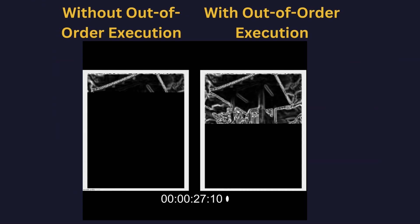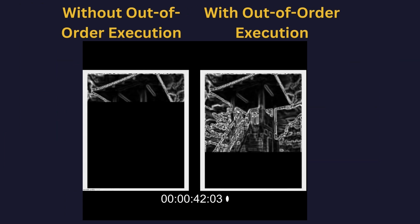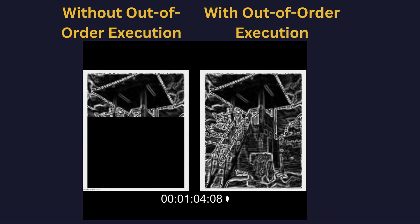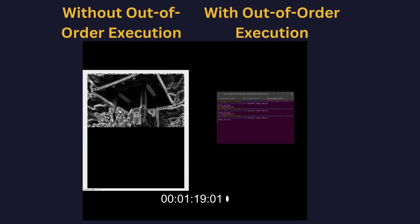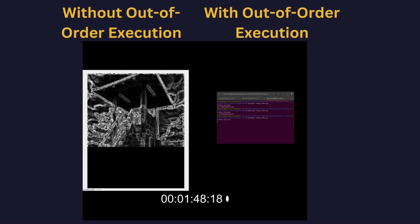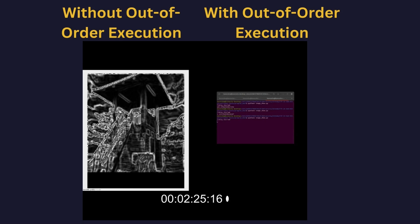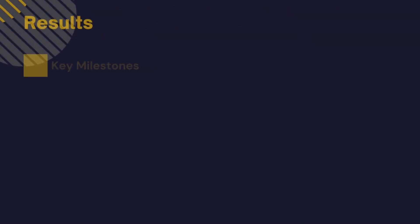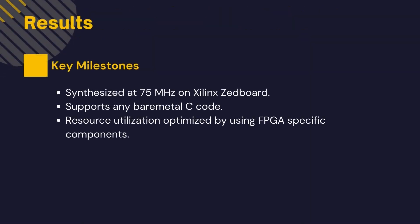In this short video, we compare the performance of an in-order processor versus our out-of-order processor. The out-of-order processor completes the algorithm in around 60 seconds, whereas the in-order processor takes around 170 seconds. This demonstrates the significant performance gain obtained through out-of-order execution.